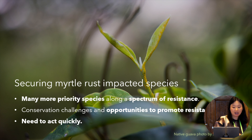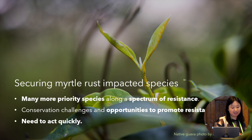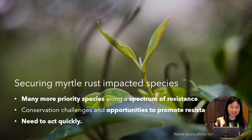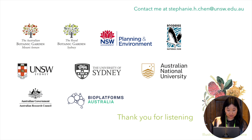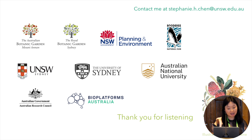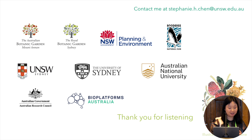To conclude, there are many more species that need our attention, occurring along a spectrum of resistance from emergency species like Rodamnia, Rotomotis, and Lenwebia, that bring conservation challenges. There are opportunities to characterise genetic diversity and resistance to rust to guide management actions, but we need to act quickly before we lose the genetic diversity within these species to myrtle rust. I would like to acknowledge the many collaborators involved in this work and the funding that has made it possible. This work was done as part of my PhD, which I recently submitted, working with the Botanic Gardens of Sydney. I've just started a postdoc at the CSIRO working on biocontrol of invasive plants based at the Australian National Herbarium, so if anyone is interested in weed biocontrol, I'd be really keen to chat.